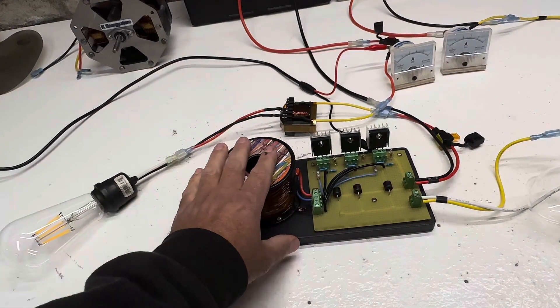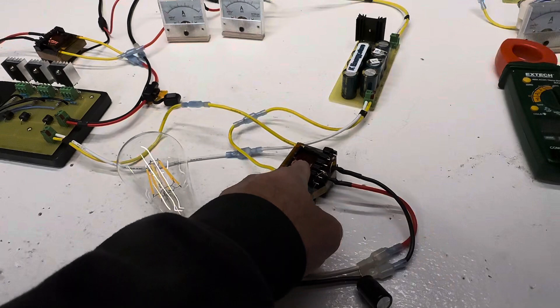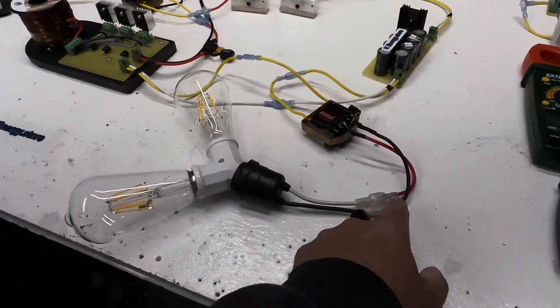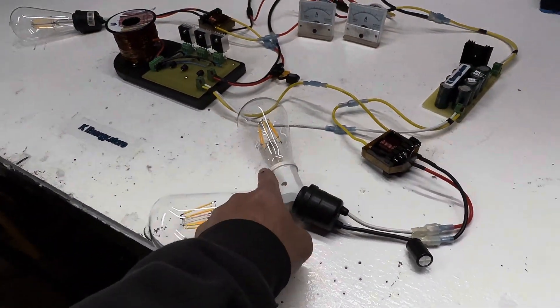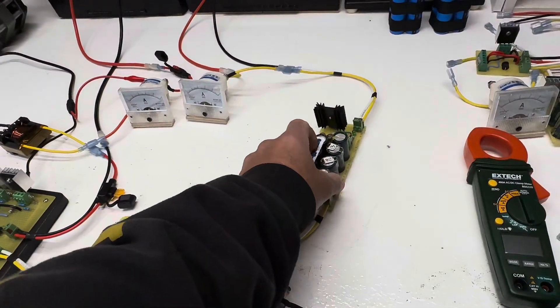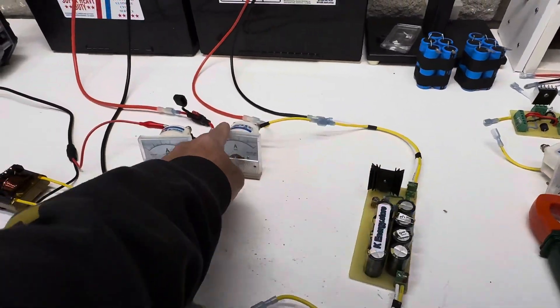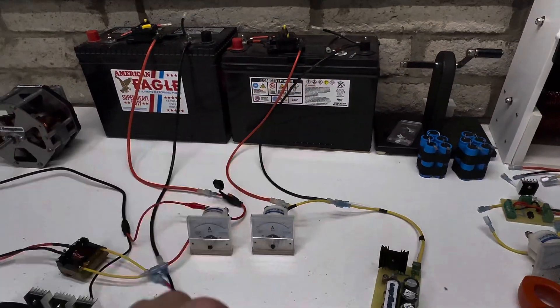And then as it's oscillating, the output comes through here, goes through this transformer which is also one-to-one, and then it runs two of these lights. Then as it continues on in series, it goes in this cap dump which is firing at 15 volts, and then through this amp meter and into this battery.